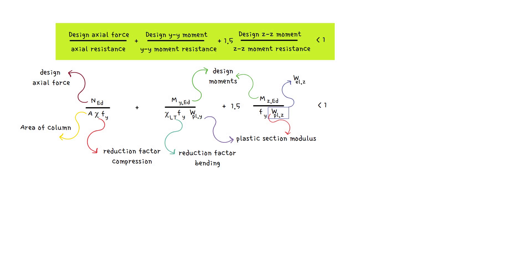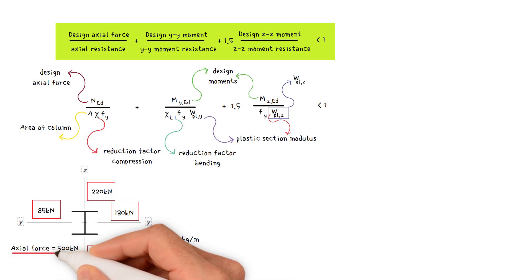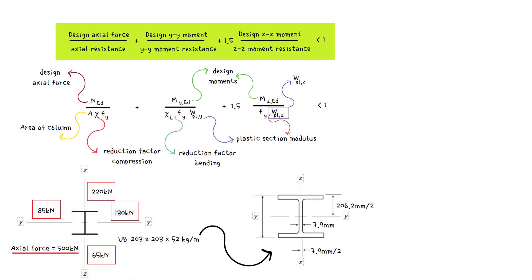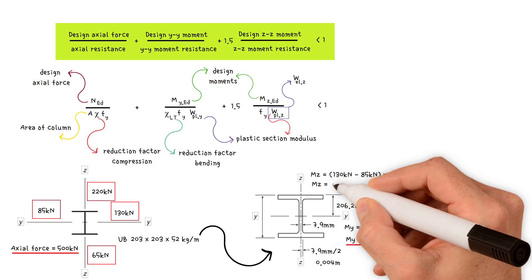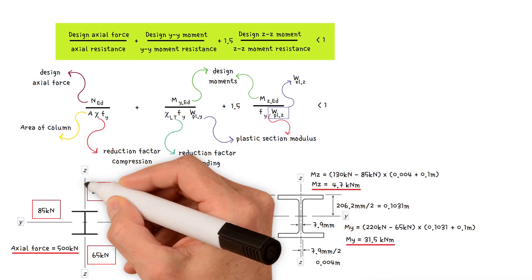In the previous video, we demonstrated how to work out the axial force and the moments for a column, which you can find in the description below. If we use the same example from the previous video, where we had 203 by 203 by 52 kilograms per meter steel column with an axial force 500 kilonewtons, a bending moment around Y axis 31.5 kilonewton meter, and 4.7 kilonewton meter around Z axis.